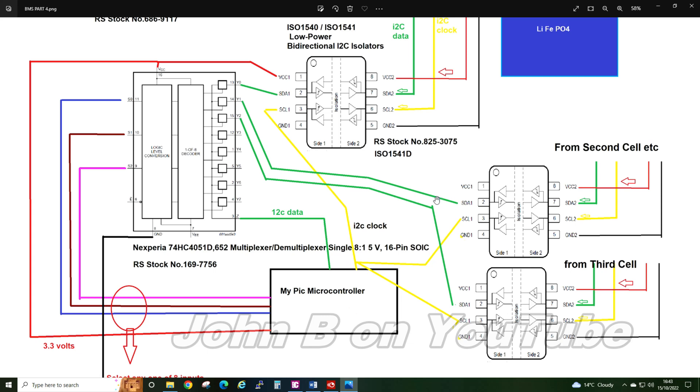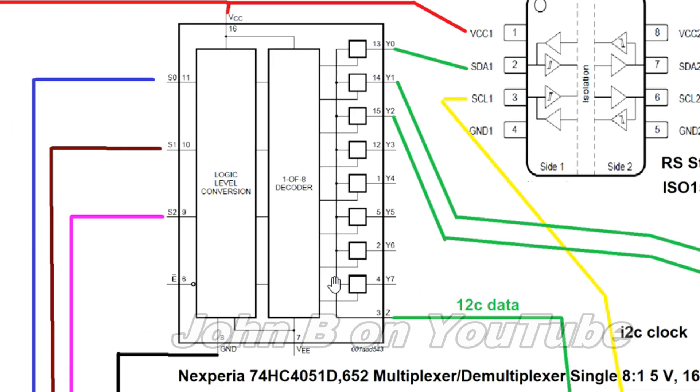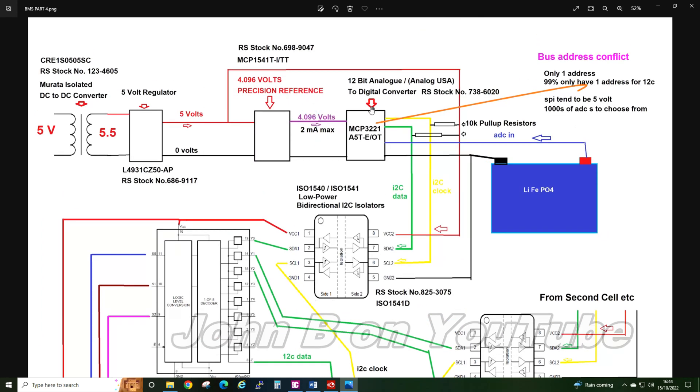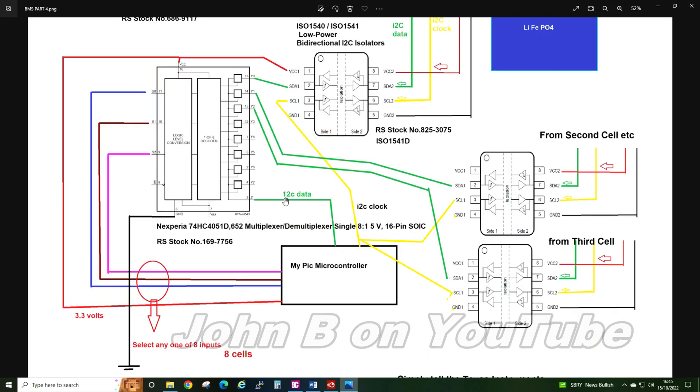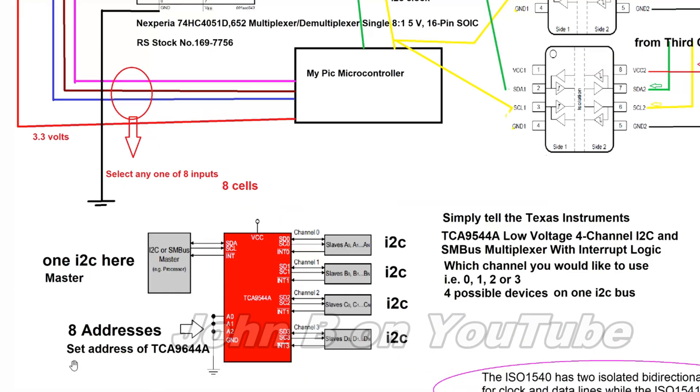To select one of eight different inputs you need three wires—that gives you eight combinations. There's S2, S1, and S0. You just send a one or zero depending on which one you want to select. I've shown one complete circuit for one cell. Another method, if you haven't got this multiplexer chip and I haven't got one, you can use this.